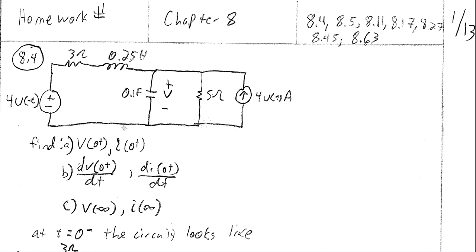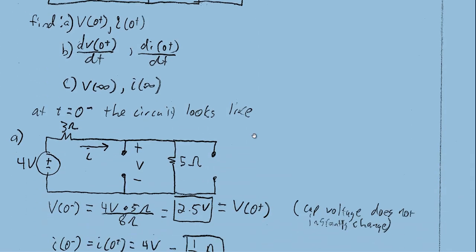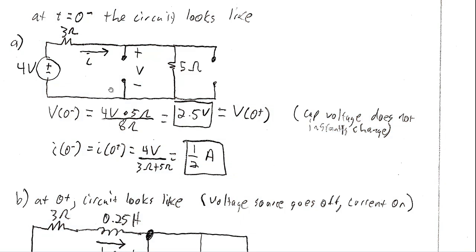At t=0⁻, right before the transition, the voltage source is behaving like a four volt voltage source. The inductor will have reached steady state, so it's behaving like a wire. The capacitor will have basically turned into an open circuit. And the current source, 4u(t), right before t=0 is going to be at zero — so it's not yet activated, behaving like an open circuit. So we have a four volt source, the inductor as a short, the capacitor as an open, and the current source as an open.